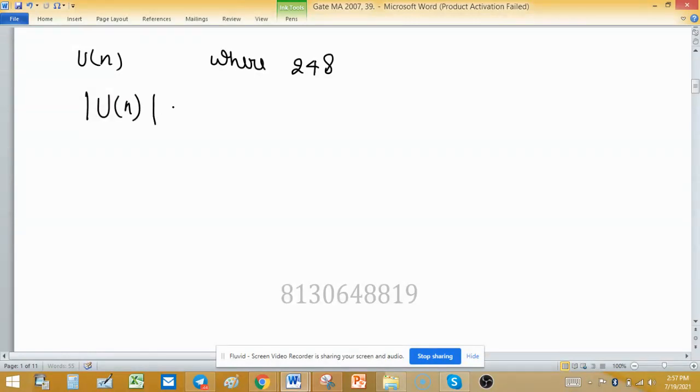Means we have to find the order of U(n), means the number of elements in U(n). And this one can be found out with the help of Euler phi function φ(n).